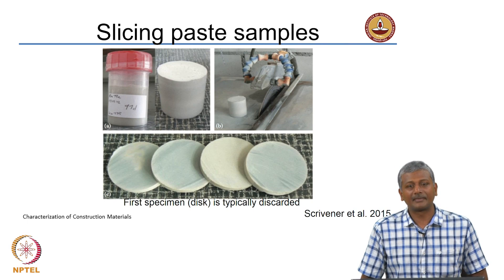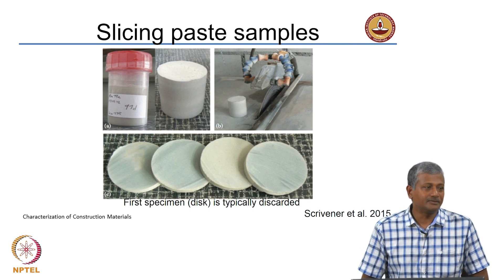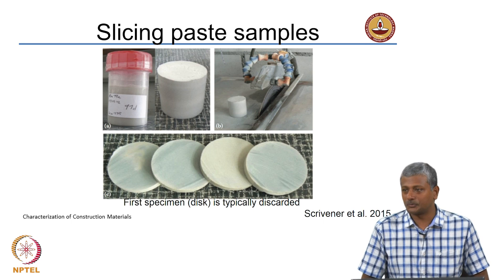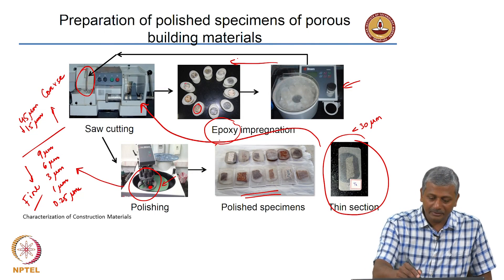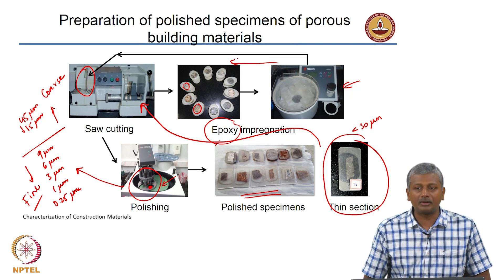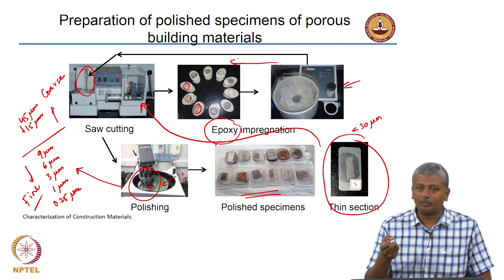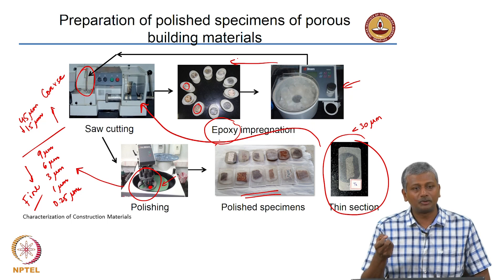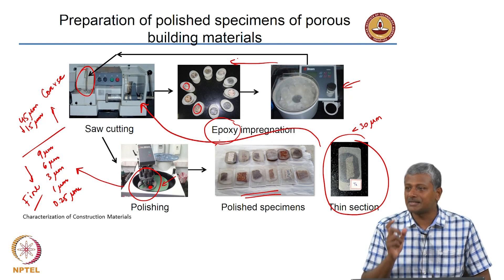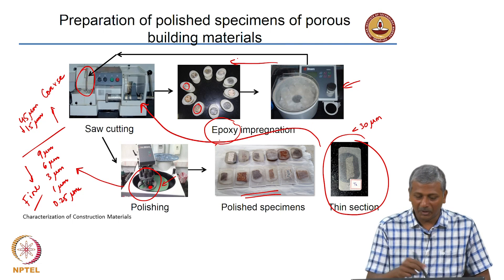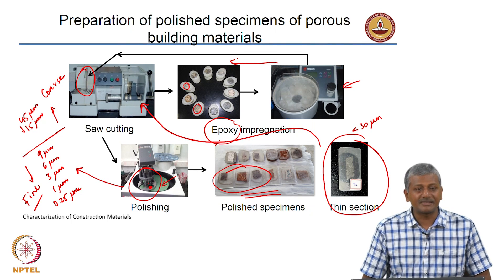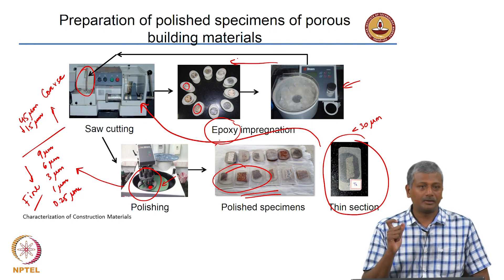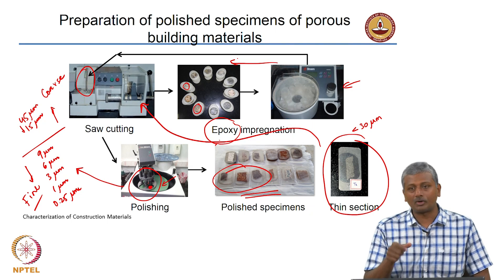A specimen has a specific dimension. In the previous example, when we had small chunks of mortar, concrete, or paste taken out from other tests to prepare for microscopy, those were samples. But after we did the epoxy impregnation, we got specimens. So we have prepared a specimen from the sample.